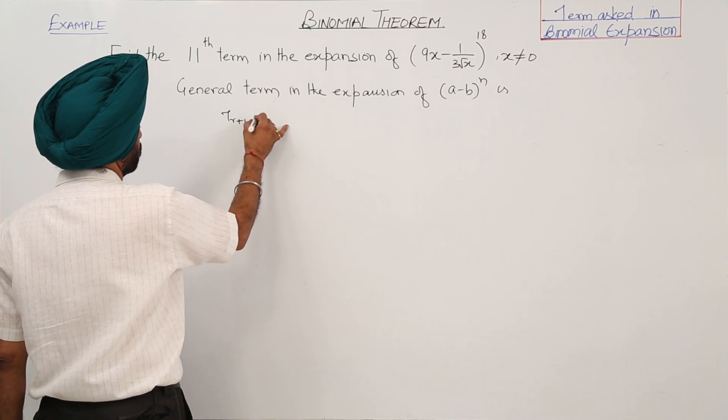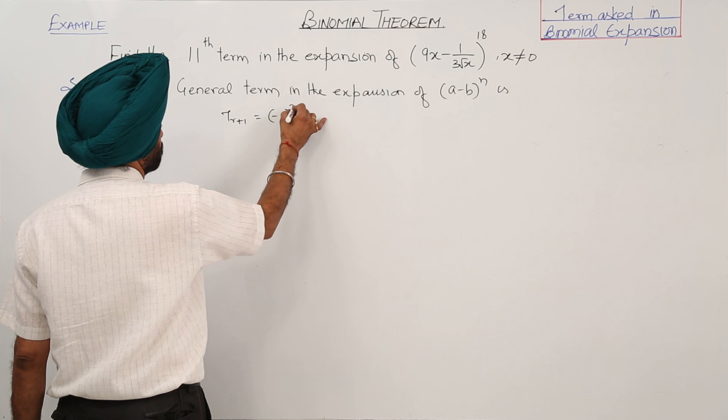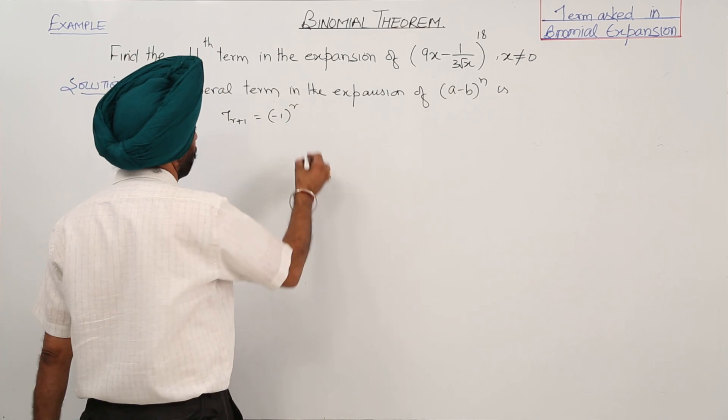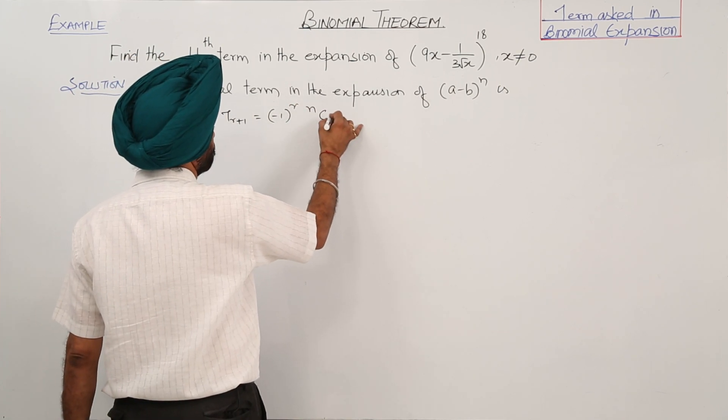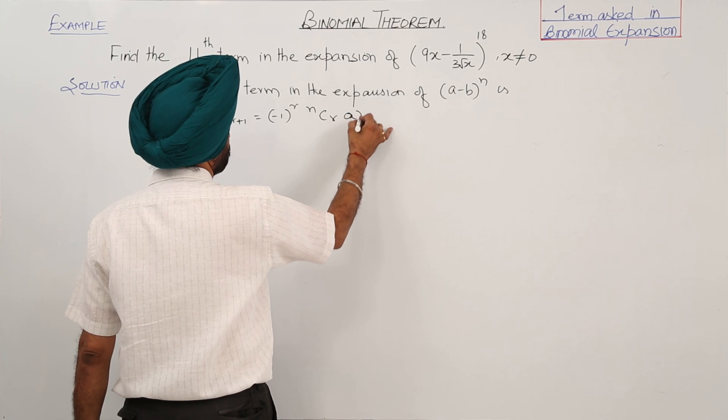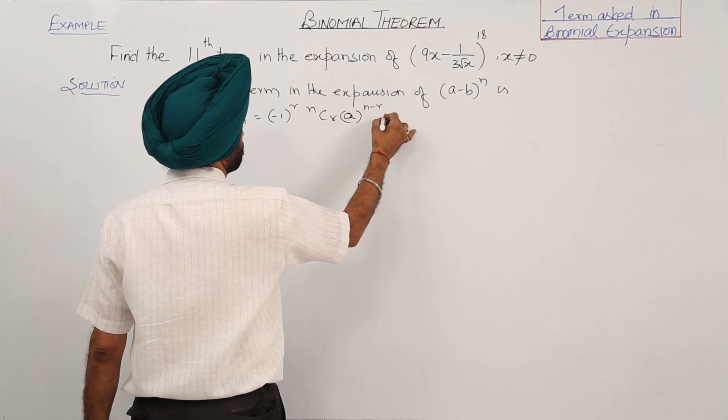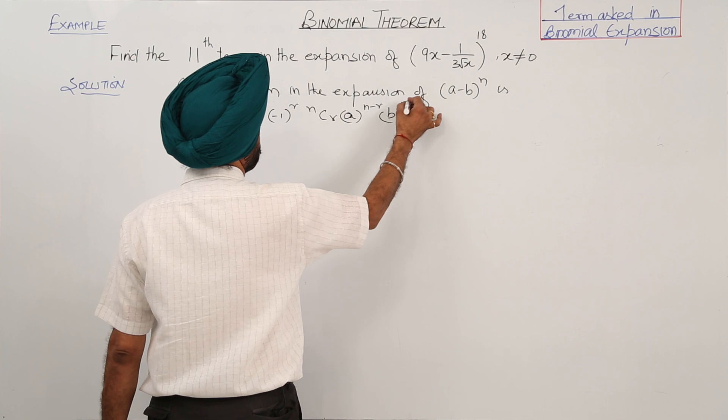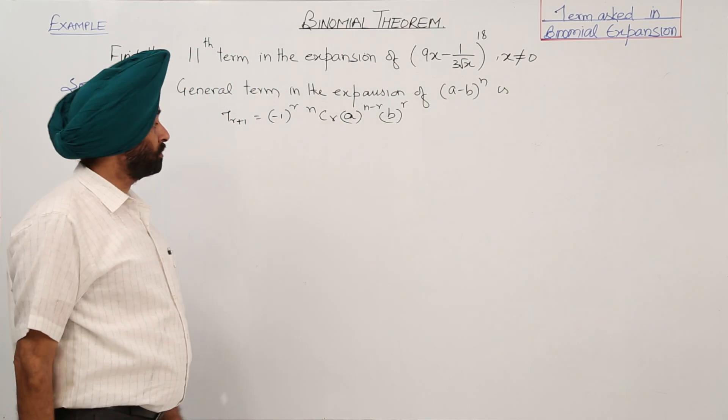t_(r+1) is equal to (-1) raised to power r times nCr times a raised to power (n-r) and b raised to power r.